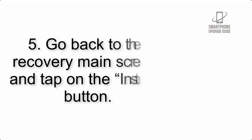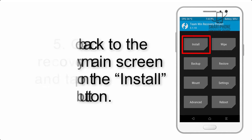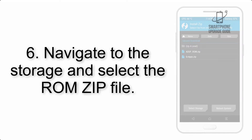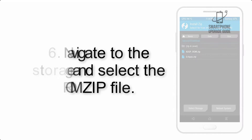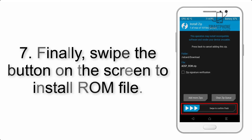Step 5: Go back to the recovery main screen and tap on the Install button. Step 6: Navigate to the storage and select the ROM zip file. Step 7: Finally, swipe the button on the screen to install the ROM file.